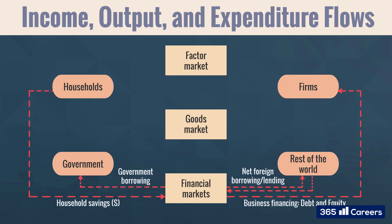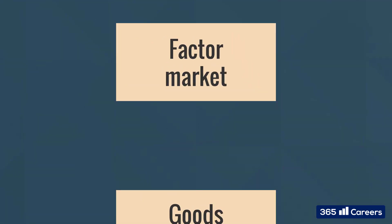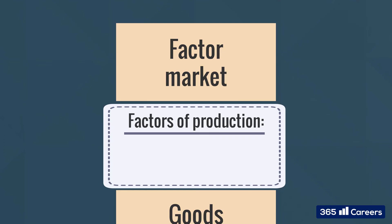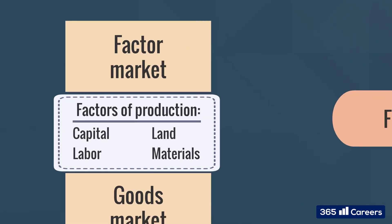Next, let's focus on the market for factors of production. Households and firms are the major players there. The main factors of production are capital, labour, land, and materials that are used in the standard manufacturing processes.